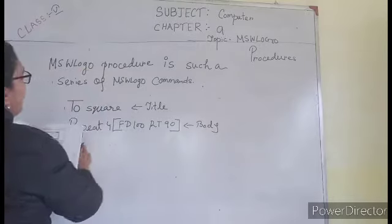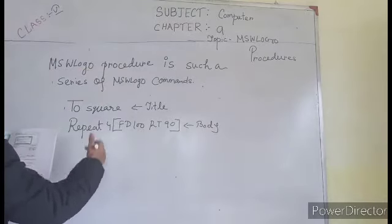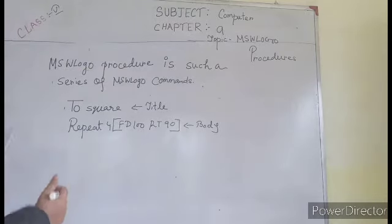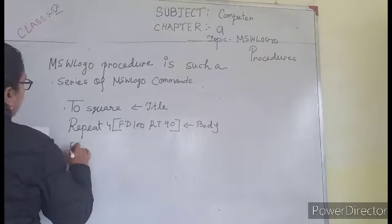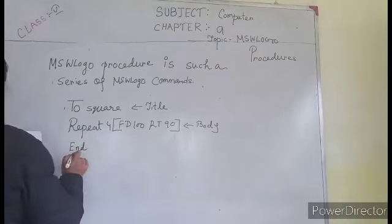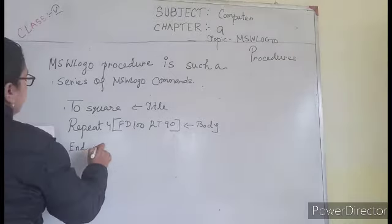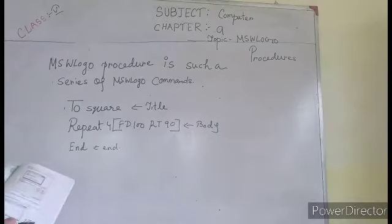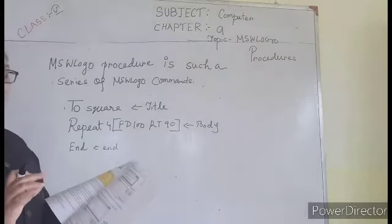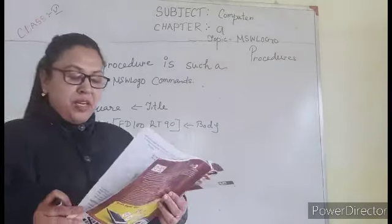This part body. What about the commands here? Only single command is there. If you have a set of commands, you write all in the body part. And at last, to close it, you need to end this command. So these three parts are here in a procedure. As soon as you give end command, the procedure will be closed.